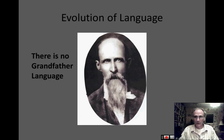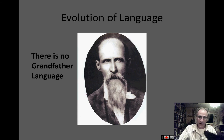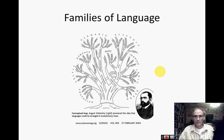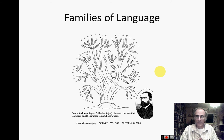When we look at the evolution of language, there is no grandfather language — there is no one language that started it all. Instead, what we have is families of language, and there is some controversy about how these things are organized. We still have these families: the Celtic language, Romantic languages, Germanic languages. There is some dispute about which branch English might fall under, because English is such a mixed-up language.